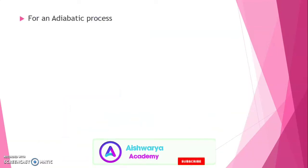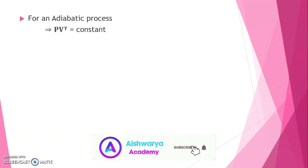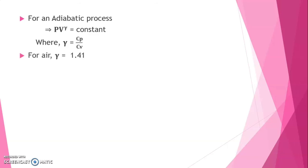Hence, for an adiabatic process, PV per gamma equals constant. Where gamma represents the ratio of specific heat at constant pressure to the specific heat at constant volume. That is, gamma equals Cp by Cv. For air, gamma equals 1.41.